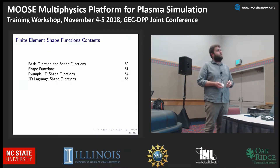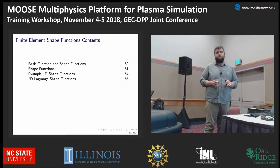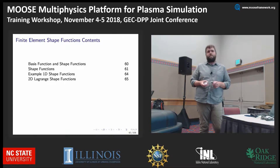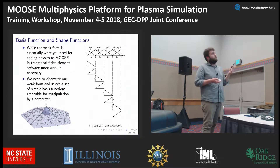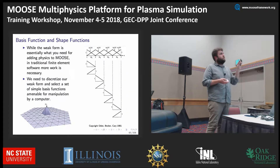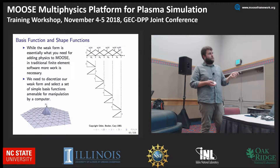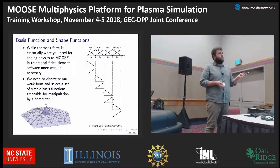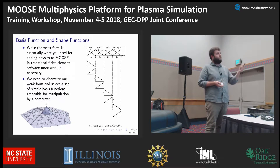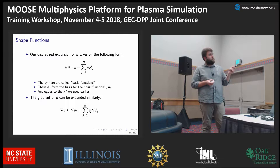Does anybody have any questions before I move on? We're about to get into talking about shape functions that we're interpolating against. The weak form is what you need to add physics, but in software the relevant form is the 2D linear Lagrange basis function. It's zero at the points around it, one at the point of interest, and linear in between — they're also called hat functions because of their shape. Our solution u is made up of a sum of uj (our coefficients) times phi_j (our basis functions).